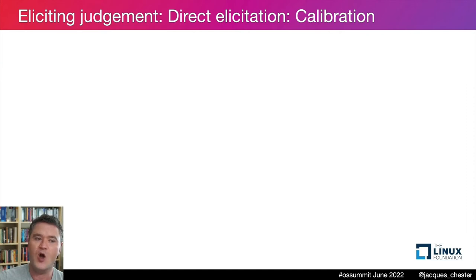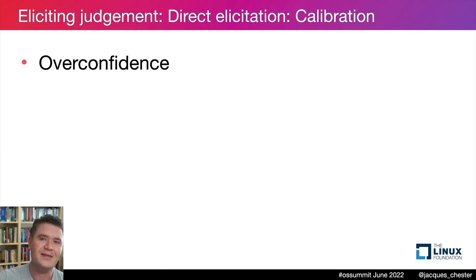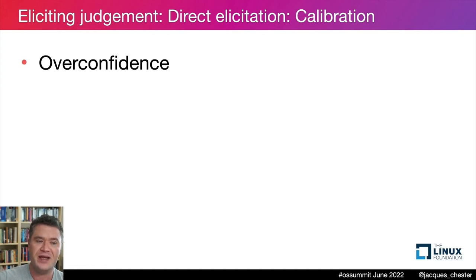An example of calibration: if I estimate something happens 50% of the time and it does turn out to happen approximately 50% of the time, my calibration is good. If instead it happens 20% or 90% of the time, my calibration is poor. Most humans are poorly calibrated out of the gate — we tend to give estimates that are overconfident. Overconfidence means I am too certain about my estimate: I didn't pick the correct value, but I'm sure that I did.